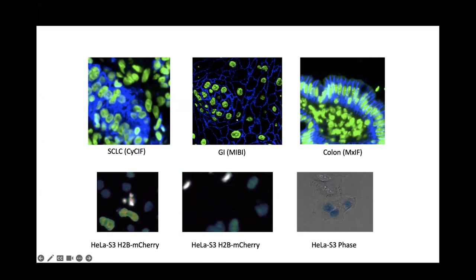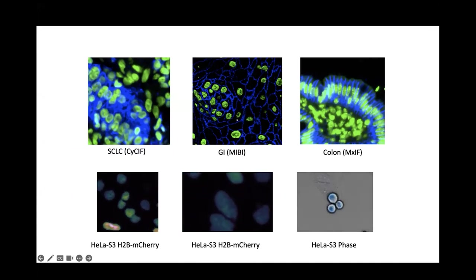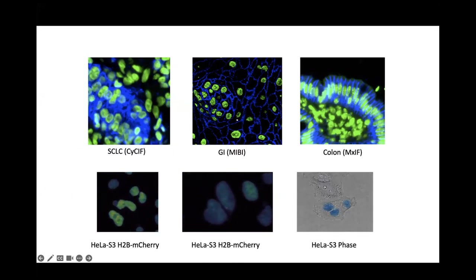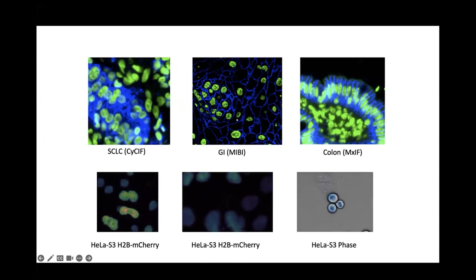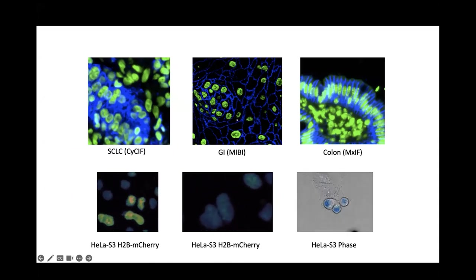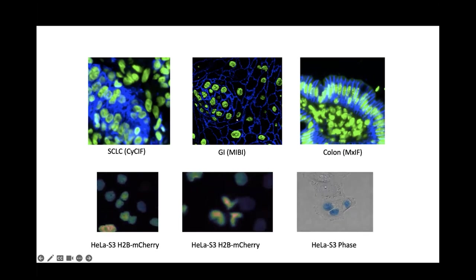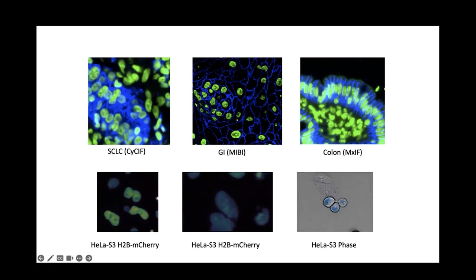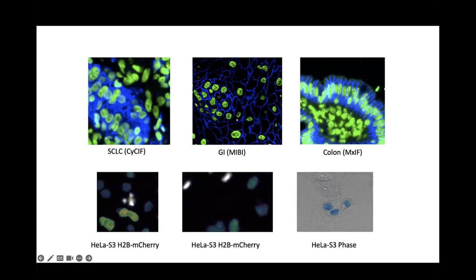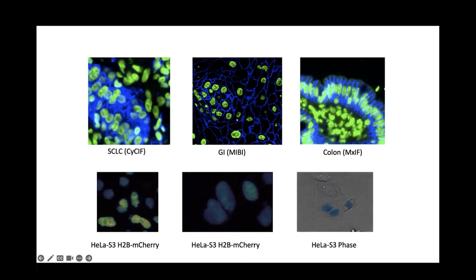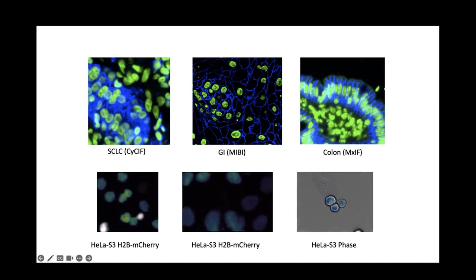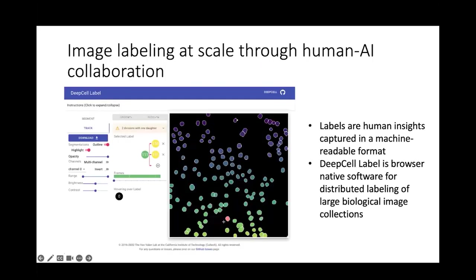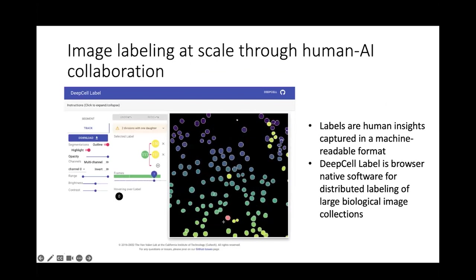For tissue imaging data, a major challenge is cell morphology, which varies substantially both across and within tissues. Signal-to-noise and autofluorescence characteristics also vary across platforms. Some cells do not have a visible cell nucleus — an artifact of doing 2D imaging of 3D objects — and in some tissues, cells are in very close proximity. For live cell imaging data, the challenge is time: entity-level labels must be temporally consistent, while dynamic events like cell divisions and cell deaths must also be labeled.